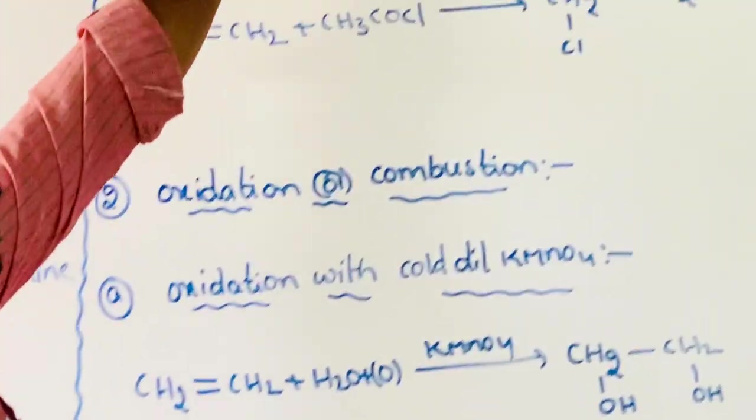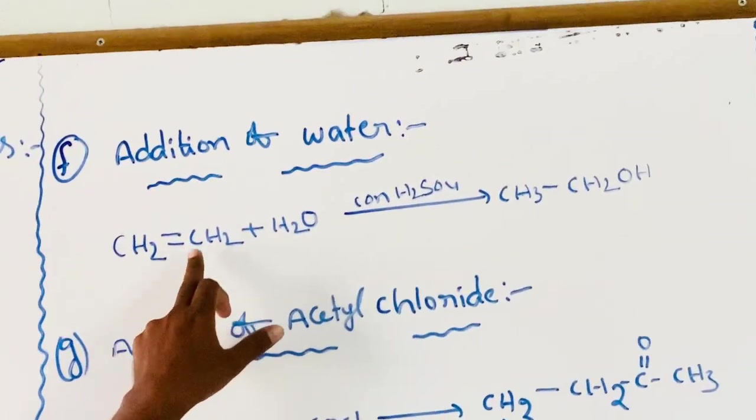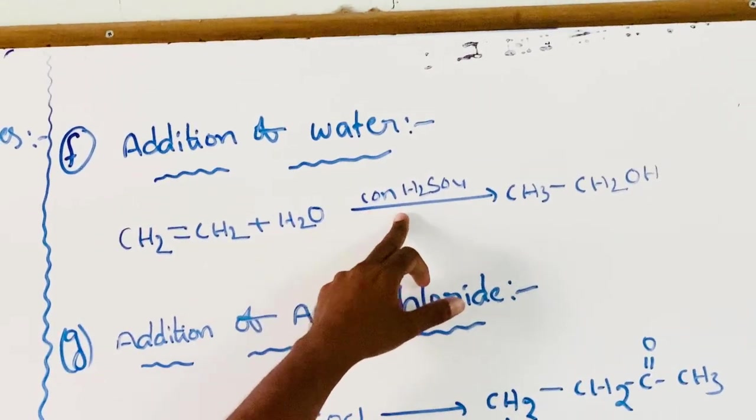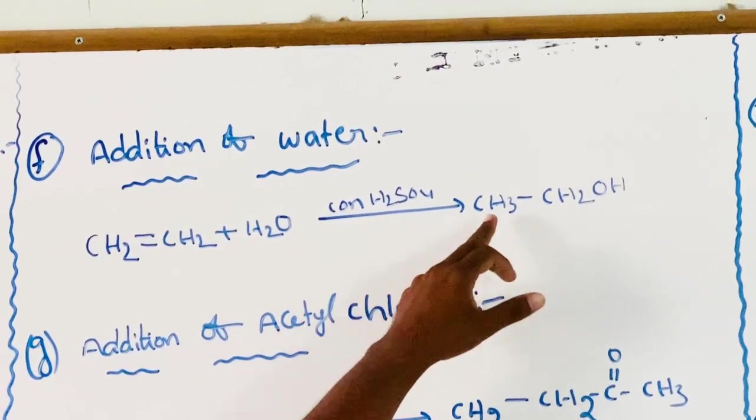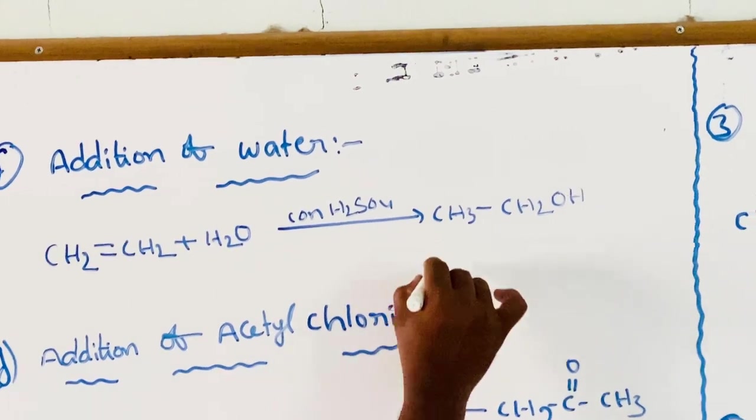Next, addition of water. Alkenes, that is ethene, react with water in the presence of concentrated sulfuric acid to give ethanol, which is an alcohol.